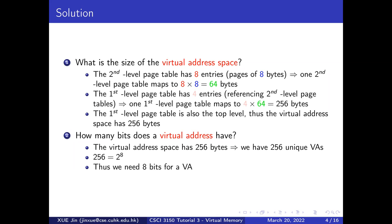The first-level page table is the top level, and we do not have any further levels. So the size that our first-level page table maps to is the size of the virtual address space — 256 bytes. For the second question, how many bits we should use for the virtual address: because the virtual address space has 256 bytes, we need to assign 256 unique virtual addresses. To represent up to 256 possibilities, we need 8 bits, because 2 to the power of 8 is 256.